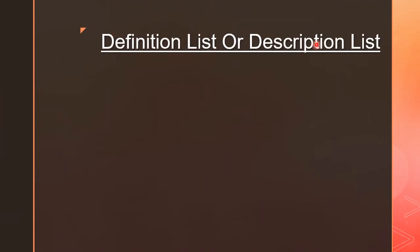Definition List or Description List — definition means defining any word or term, giving the meaning of that word or term, or even describing that word. That is called a Definition List or Description List. As you have seen in a dictionary, there will be a word and its meaning in front of it.